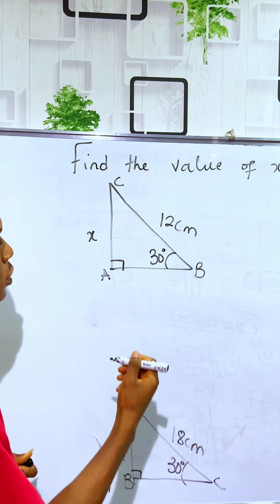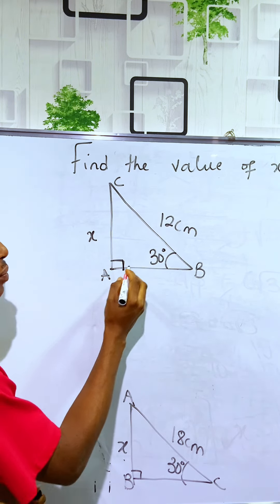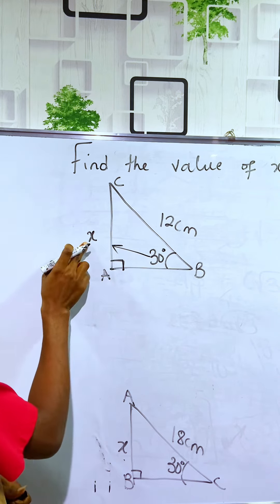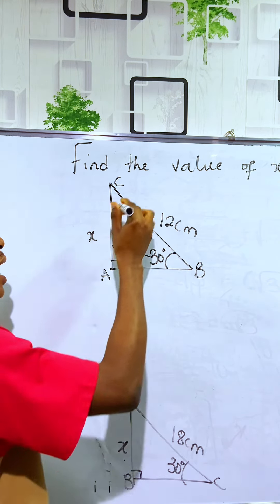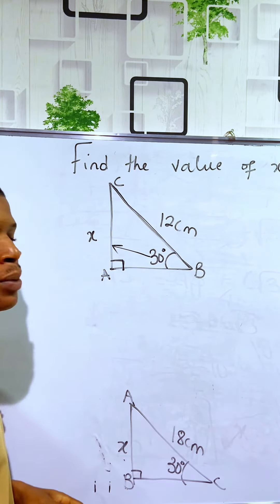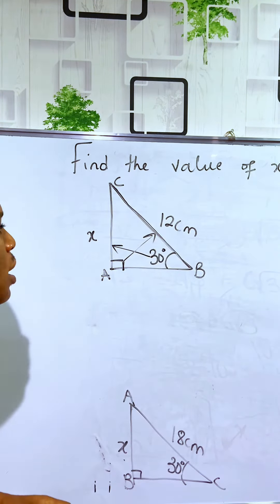First thing you are going to do is observe the angle. It is a right angle at A. The side the angle is facing is the opposite. The longest side of the right-angle triangle is the hypotenuse because it is directly facing the 90-degree angle.